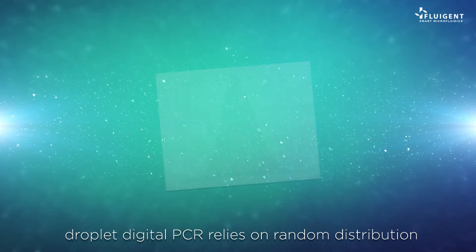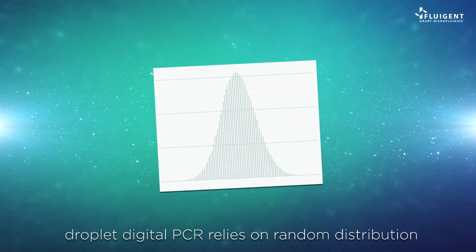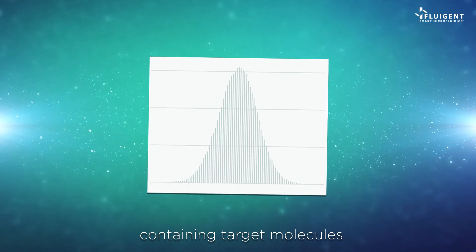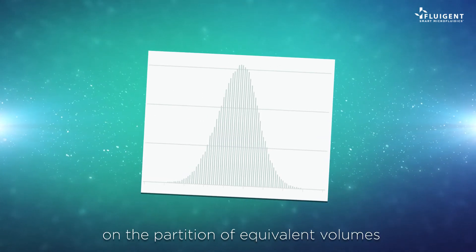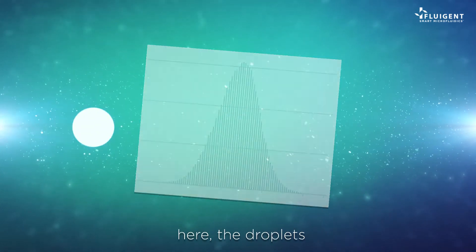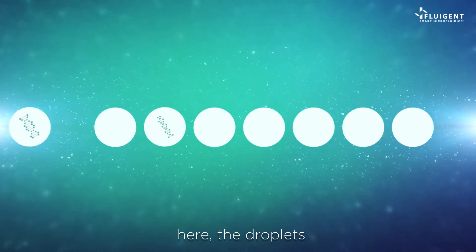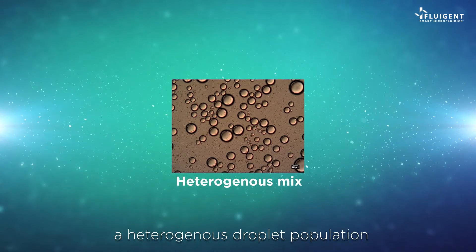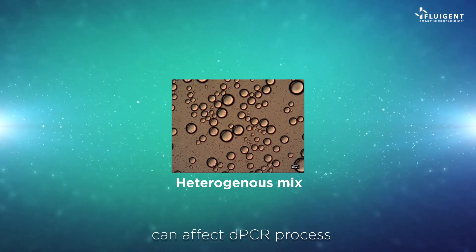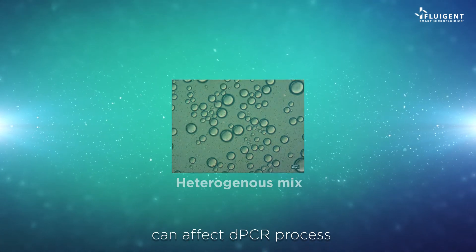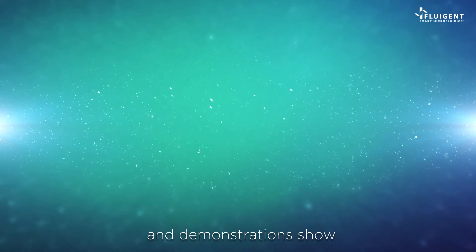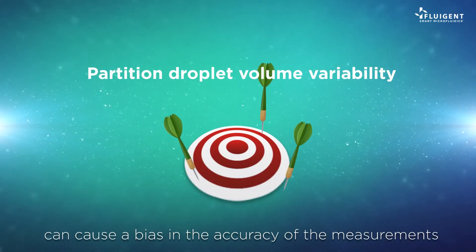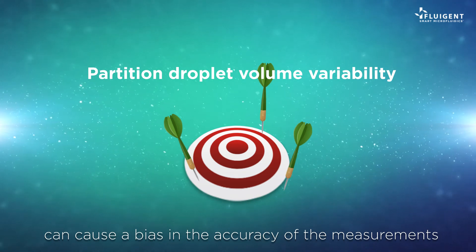Droplet digital PCR relies on random distribution of dPCR mix containing target molecules on the partition of equivalent volumes. Here, the droplets must be uniform. As a consequence, a heterogeneous droplet population can affect the dPCR process, and demonstrations show that partition droplet volume variability can cause a bias on the accuracy of the measurements.